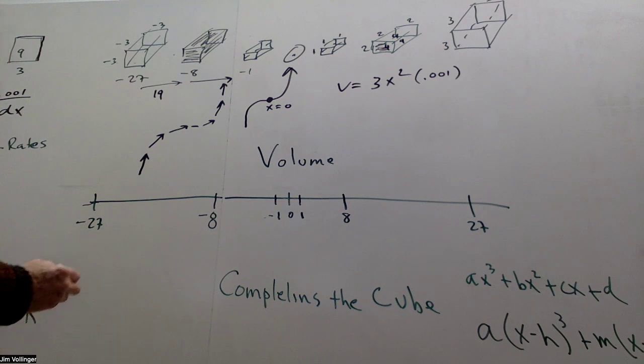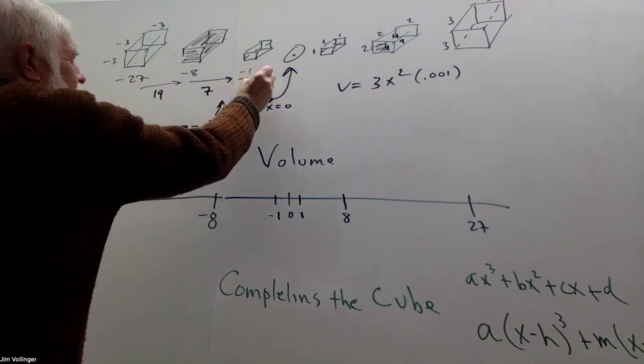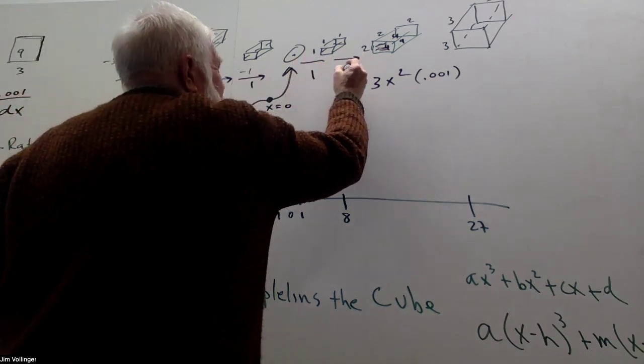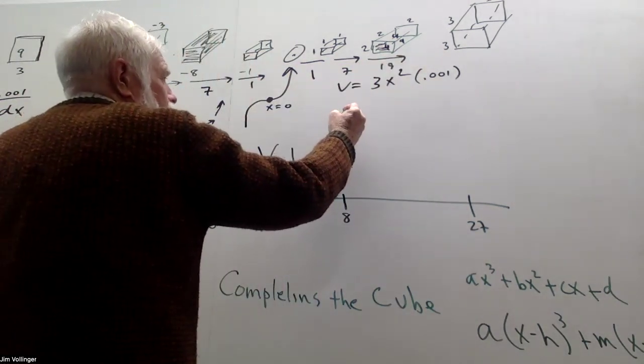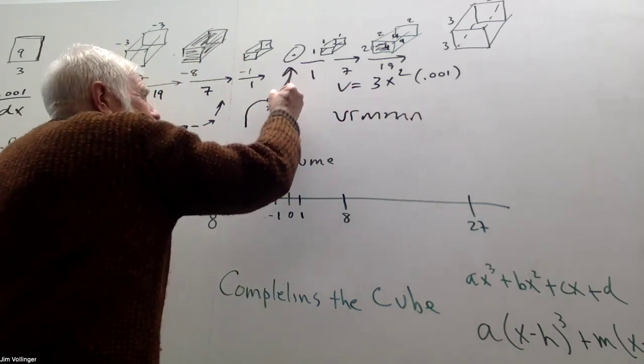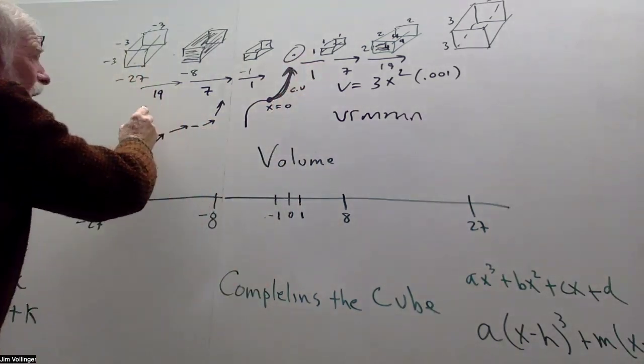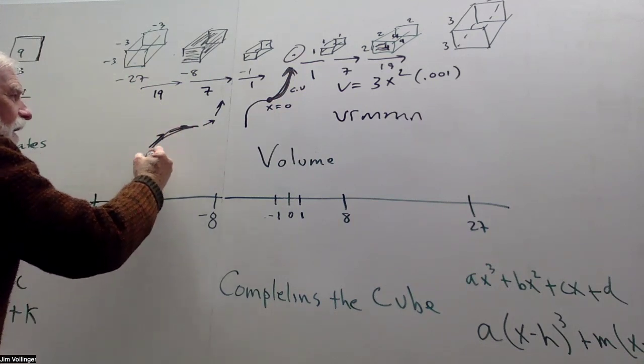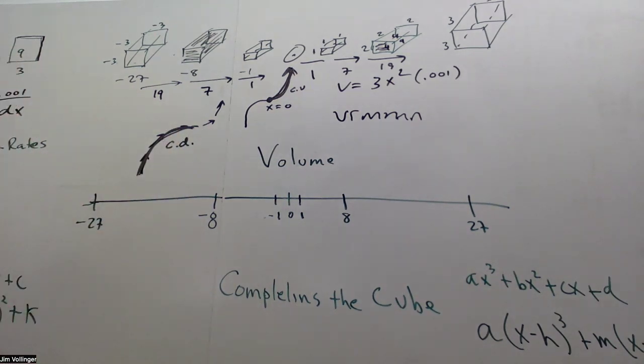Now, there's a big difference here because from 19 to 7 to 1, that's different than 1 to 7 to 19. That's acceleration. We call that concave up. Whereas over here, I'm going up, but less quickly. We call that concave down.